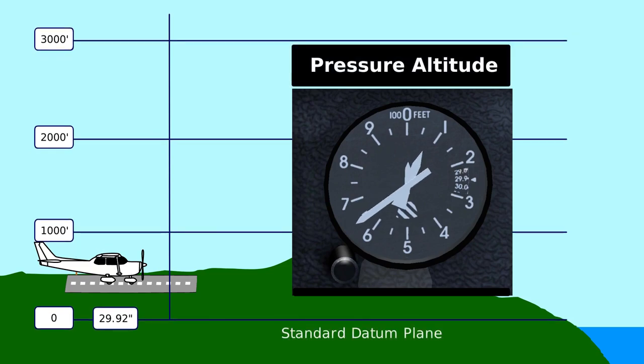This is our altitude above a reference line called the standard datum plane, which is the 29.92 pressure level. This line is defined to be the pressure at sea level on a standard day. Pressure altitude is used for performance calculations.